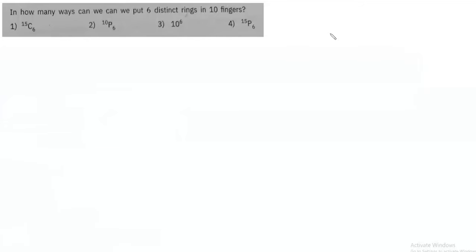Now first we look at the wrong way of solving this question and then we proceed to the correct way of approaching it. The wrong way of solving this question is: for the first ring we have 10 choices, for the second ring also we have 10 choices, again for the third it will be 10 choices, and this continues for all 6 rings. This gives 10 to the power 6, which is option 3, but this option is definitely incorrect.